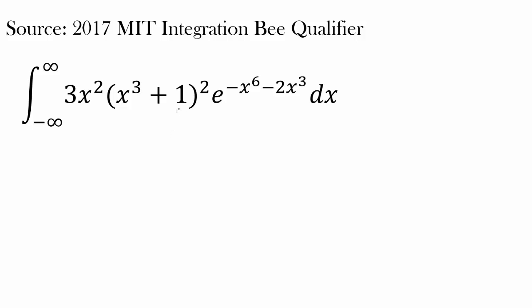This is a very long integral, but something that immediately stands out is that we have x³+1 right here, and we also have the derivative of x³+1, or 3x², residing right next to it. So maybe a u-substitution we can utilize is u = x³+1, because du = 3x² dx, and we have 3x² right next to it.